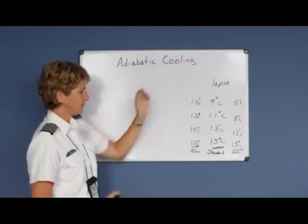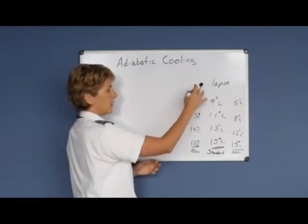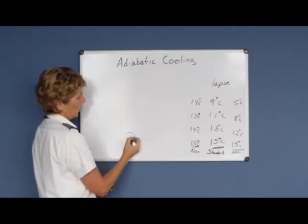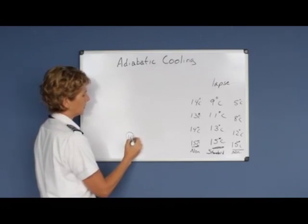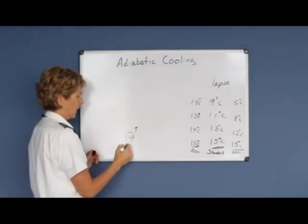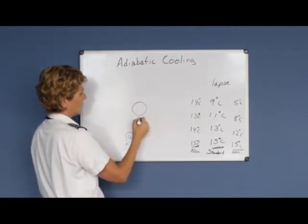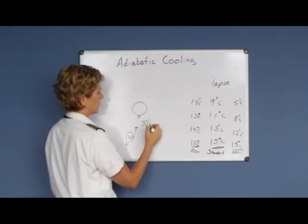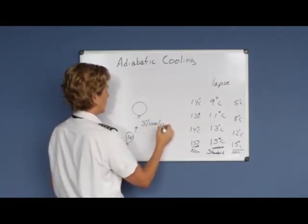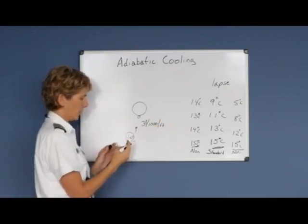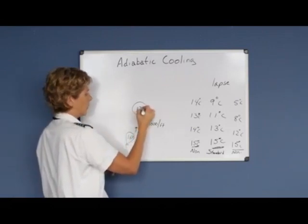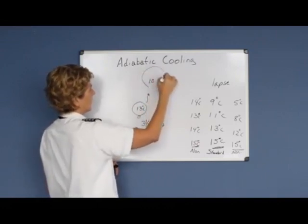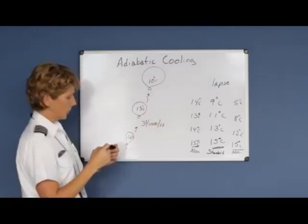When we talk about adiabatic cooling, we're talking about forcing air up within this already existing lapse rate. For example, if we had a balloon filled with air and the temperature in the balloon was 16 degrees, if we force this balloon up, it's going to expand. And as it expands, there's less friction, so the temperature will drop at a very consistent 3 degrees per thousand feet. So if the air inside the balloon's temperature started at 16, it would be a very predictable 13 by the time it went 1,000 feet, and then 10 at the next 1,000 feet. That is due to adiabatic cooling.